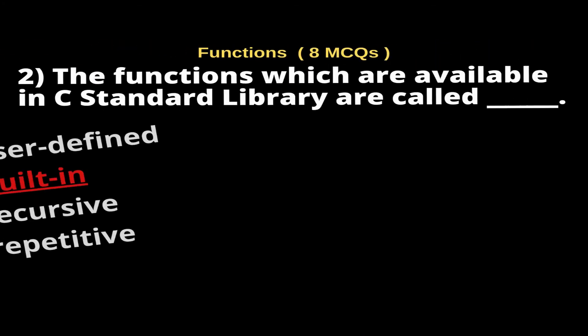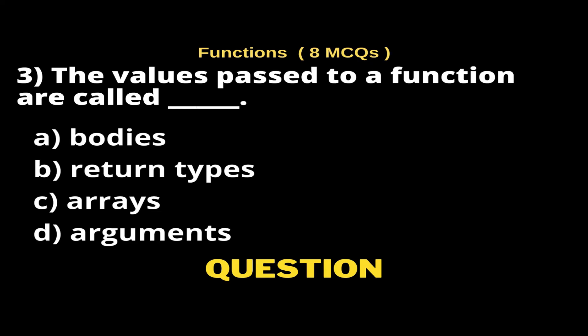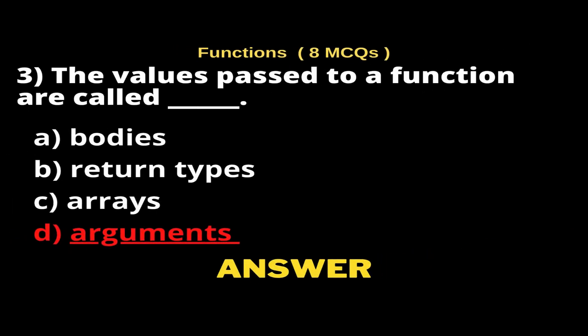Question 3: The values passed to a function are called ___. Options: A) Bodies, B) Return Types, C) Arrays, D) Arguments. The right answer is Option D, Arguments.